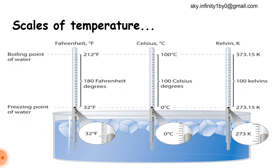Now we will see the various scales of temperature. Three different thermometers with three different scales are dipped in a jar of water. For the freezing point of water: the Fahrenheit scale shows 32 degrees Fahrenheit, the Celsius scale shows 0 degrees Celsius, and the Kelvin scale shows 273.15 Kelvin. For the boiling point of water: the Fahrenheit scale shows 212 degrees Fahrenheit, the Celsius scale shows 100 degrees Celsius, and the Kelvin scale shows 373.15 Kelvin.